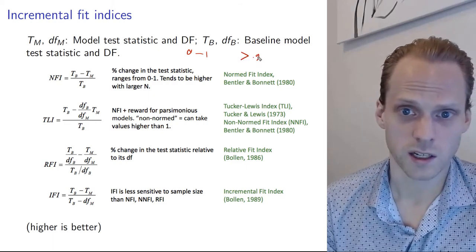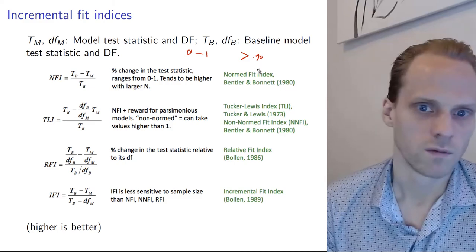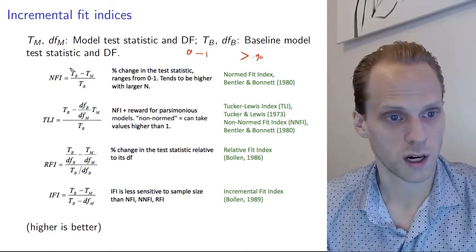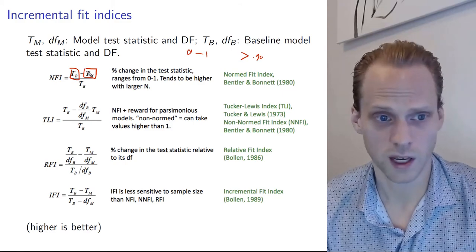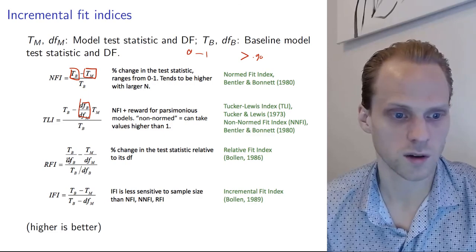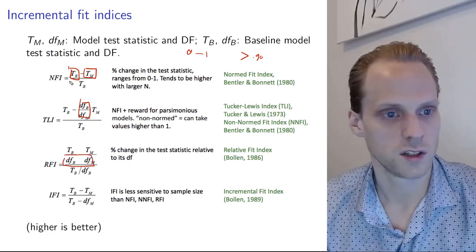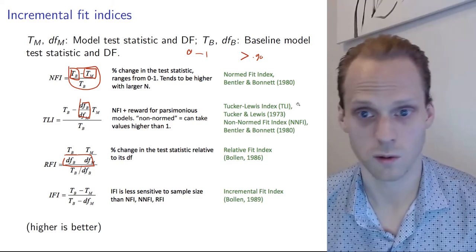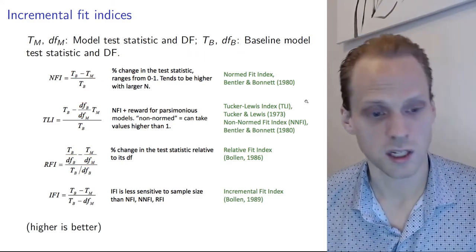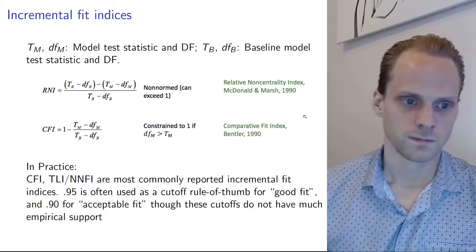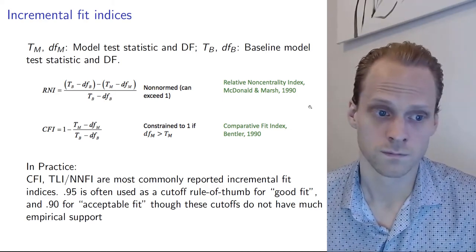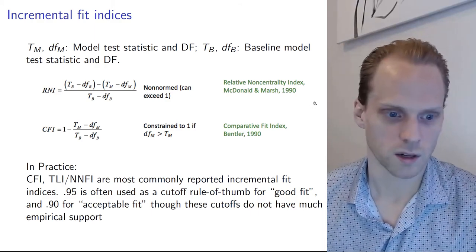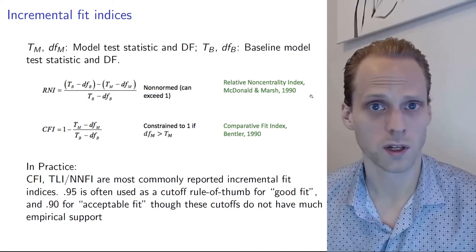There are differences in recommendations people give. All of them compare the fit of the baseline model to the fit of our model with some function — sometimes weighted by degrees of freedom, sometimes not. Some are better in certain cases than others. Usually people just report a lot of them, which is fine — if they're all good, that's a good sign. Don't cherry-pick; ideally pre-register which ones you're going to report.